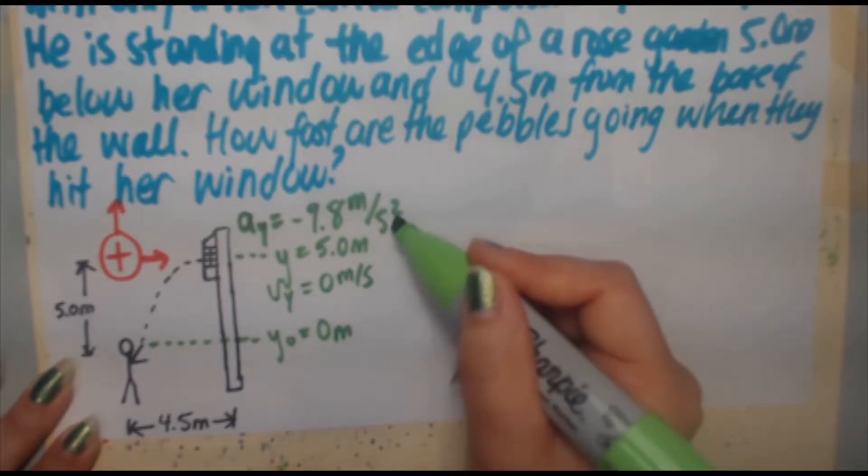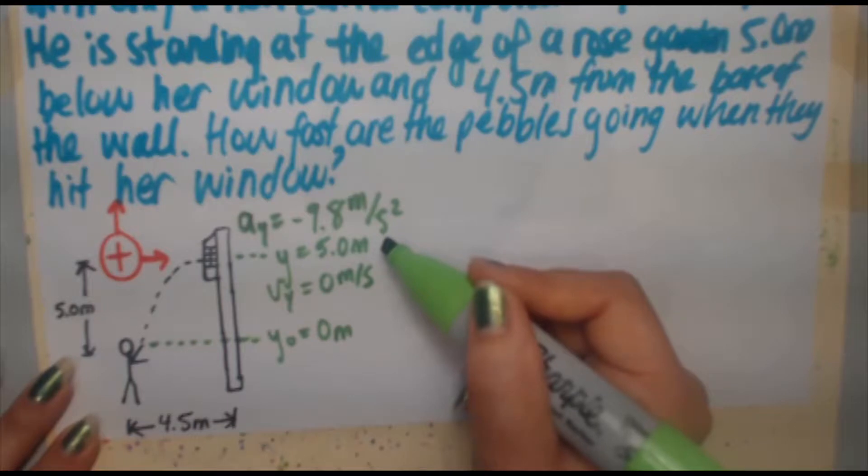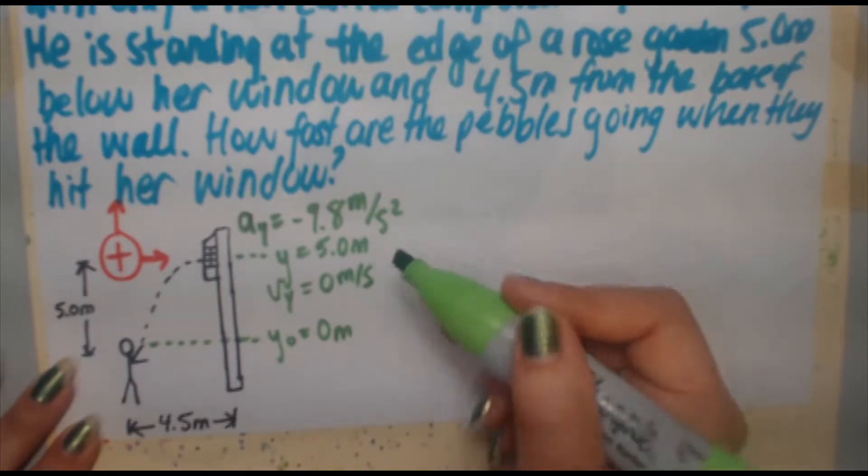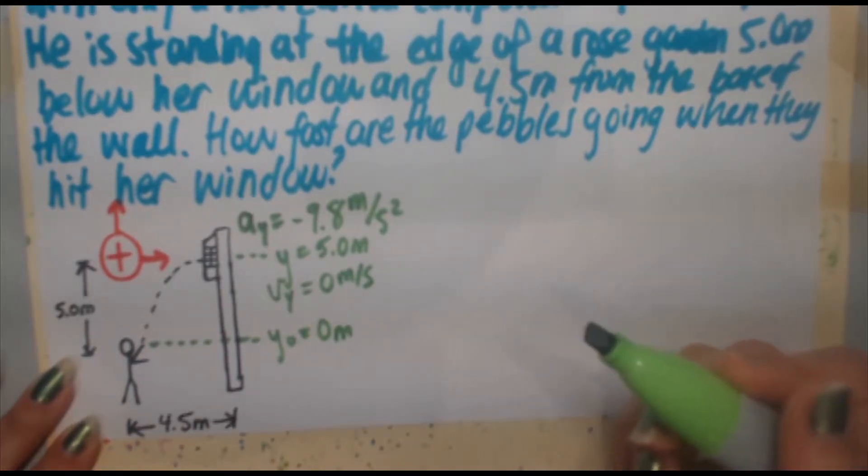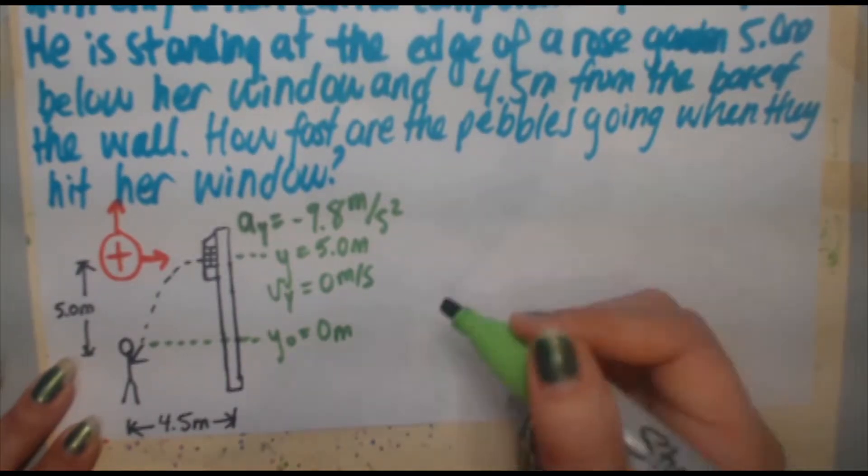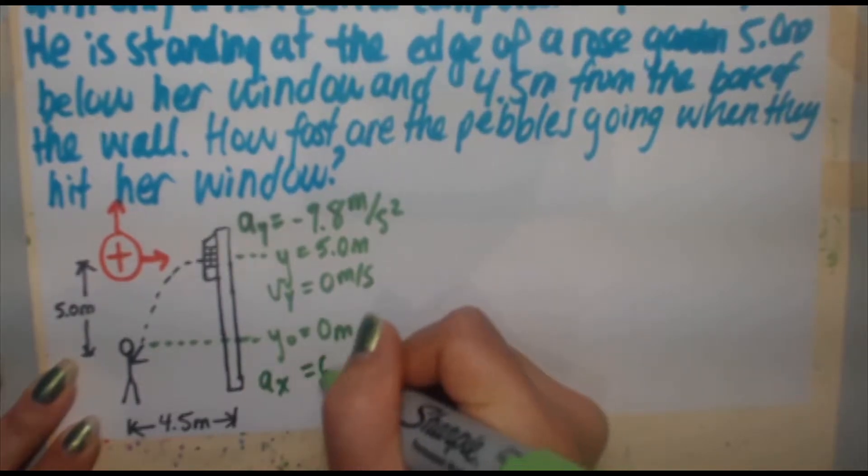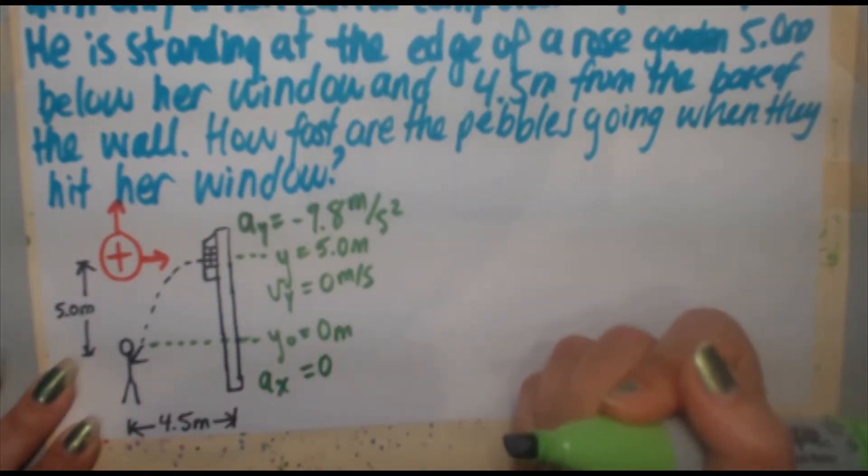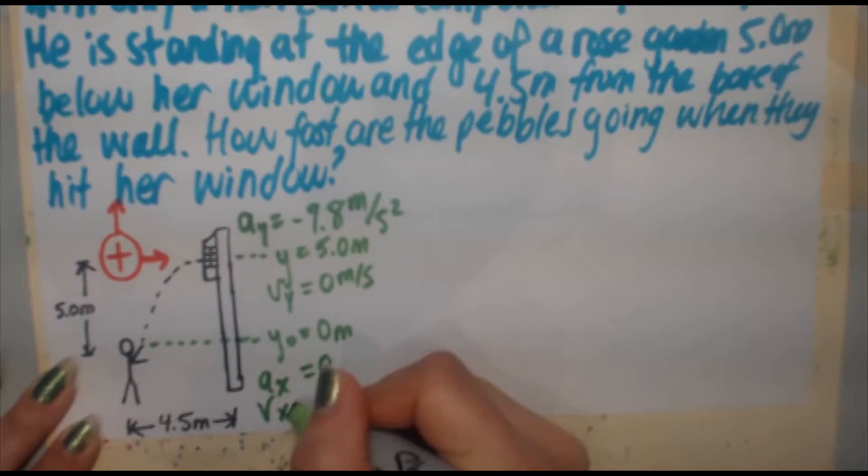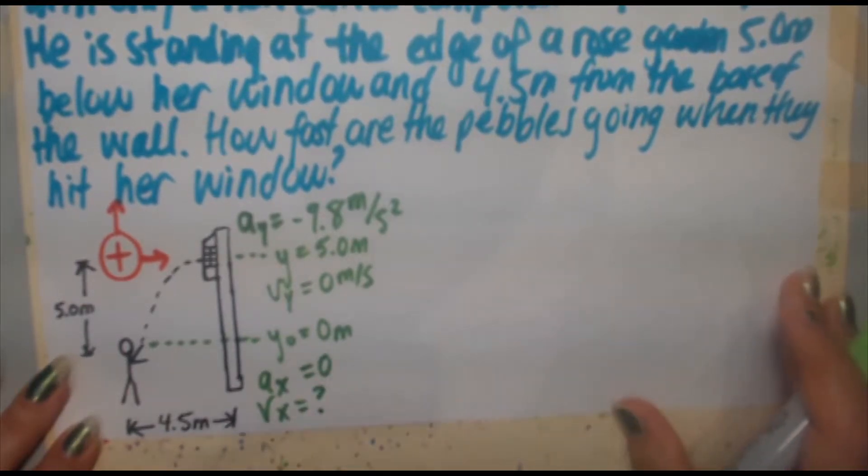Let's do some symmetry here. We said the acceleration in the y direction is negative 9.8 meters per second squared. Let's define our acceleration in the x direction. As mentioned in the previous videos, because this is projectile motion, projectile motion means only gravity is affecting something. So that's the only force acting on it, ignoring air resistance. That means acceleration in the x direction is 0. And we need to find vx.